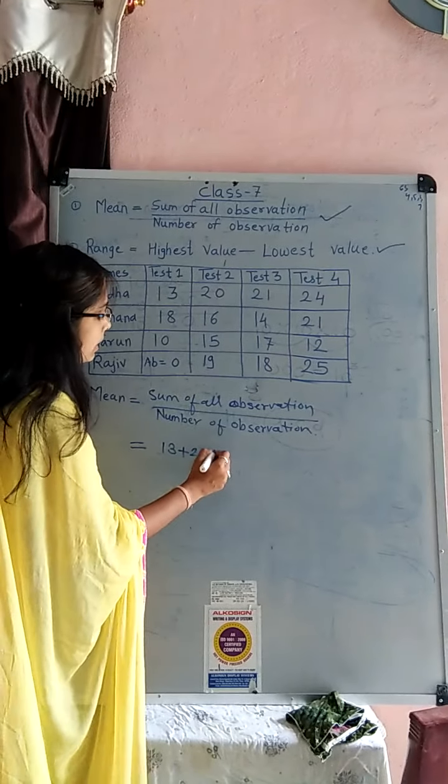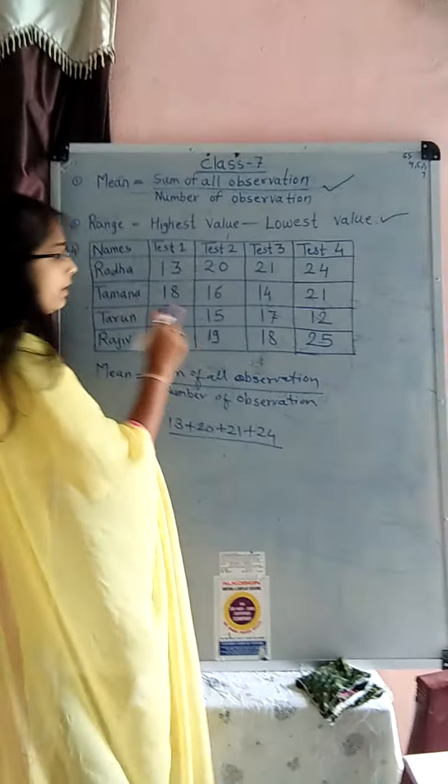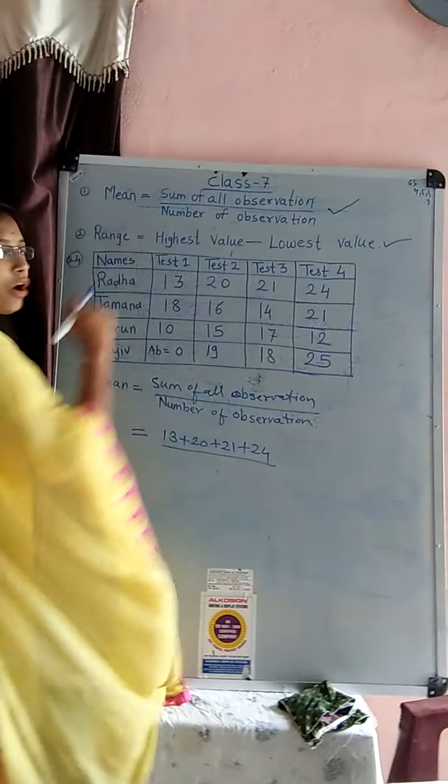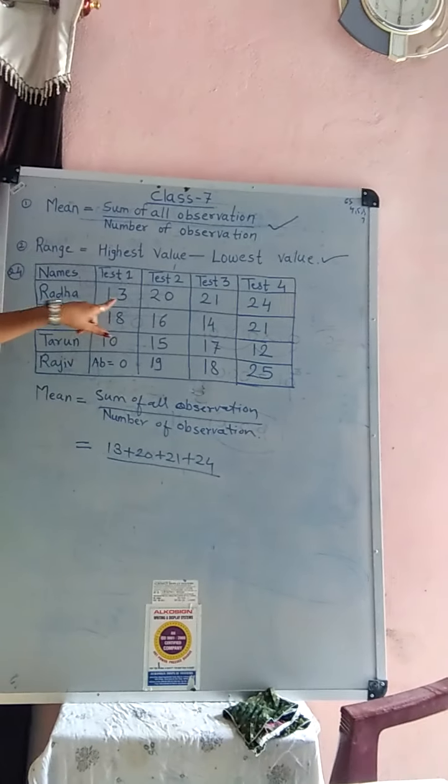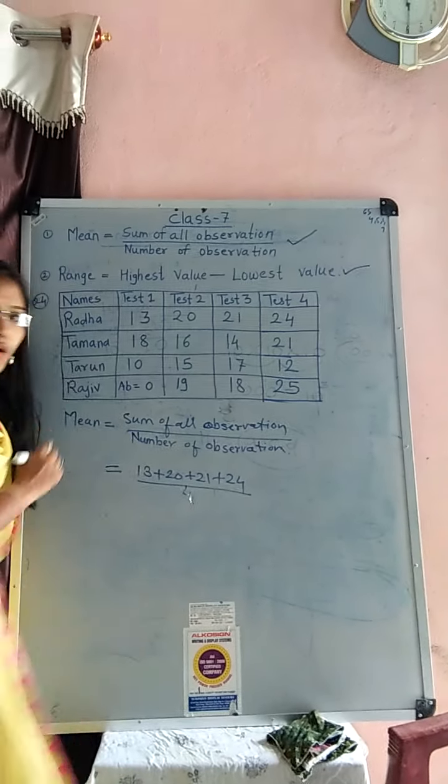13 plus 20 plus 21 plus 24 divided by number of observation. How many numbers? 1, 2, 3, 4. 4 number of observation. So, write here, 4.